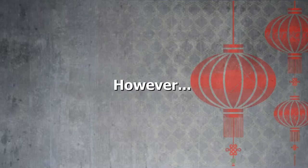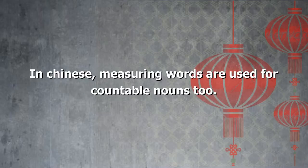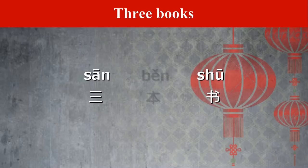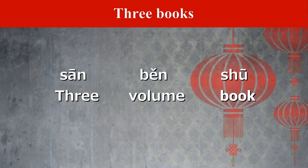However, in Chinese we also use a measuring word for countable nouns. Take 'three books' as an example. When expressing this in Chinese it becomes san ben shu. San means three, ben is the measuring word with a similar meaning to 'volume,' and shu means book.